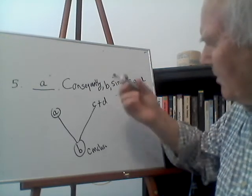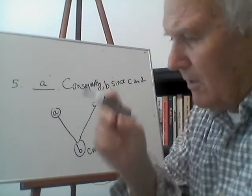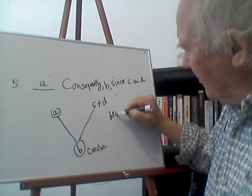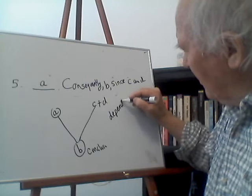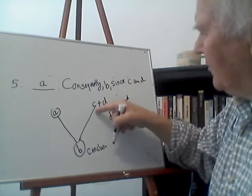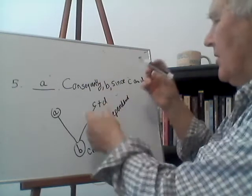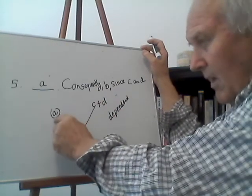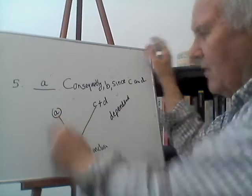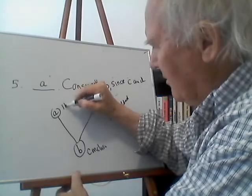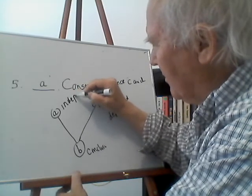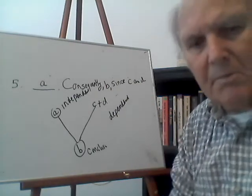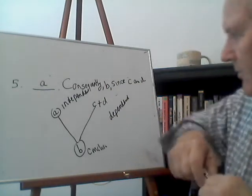When you see C plus D, these are dependent reasons — it's not enough simply to have C, they depend upon one another. Notice that A is separated from these — A is called an independent reason. So it's very important to be able to distinguish independent from dependent reasons.